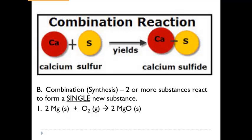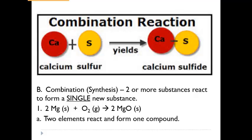Here is a balanced chemical equation of magnesium and oxygen. Notice that oxygen is a diatomic molecule, so it's written as O2, and then it becomes magnesium oxide. Magnesium is a plus two and oxygen is a minus two, so we need to know our rules for writing formulas to make sure everything is balanced correctly. We have two elements reacting to form one compound — a combination reaction.